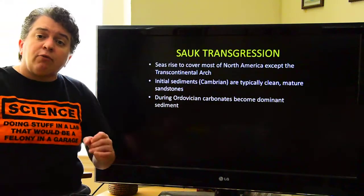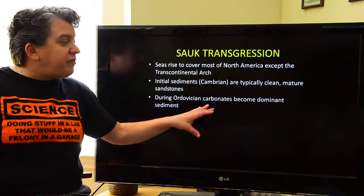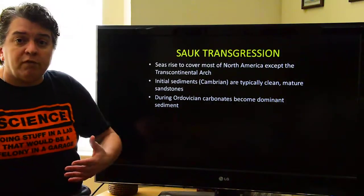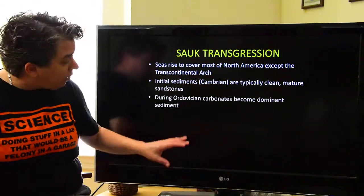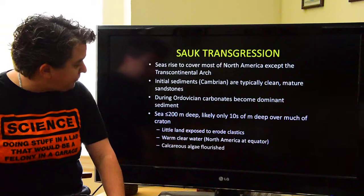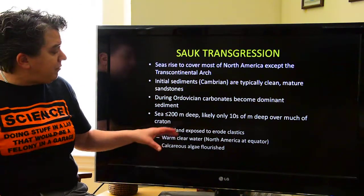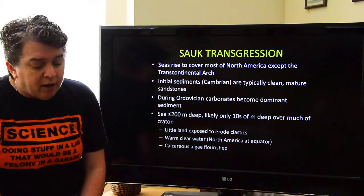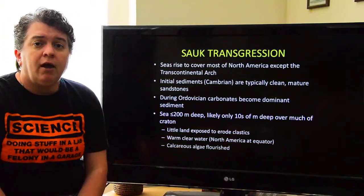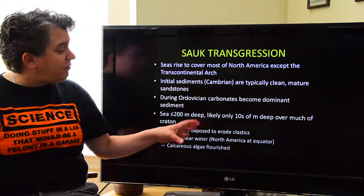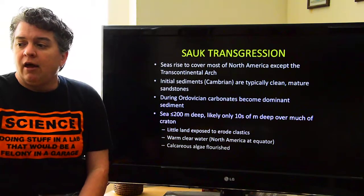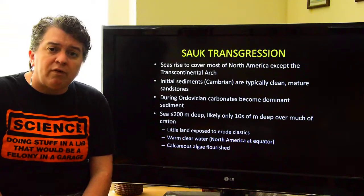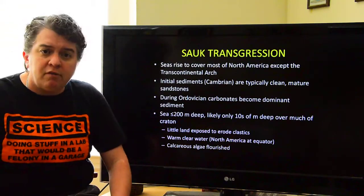As sea levels continue to rise and the water gets deeper, we start seeing carbonates — limestones and dolostones. During the Ordovician, when sea level was at its highest and we have the deepest water, limestones become much more dominant. The ocean covering North America was less than about 200 meters deep, and in many places only tens of meters deep. In Texas, the water probably wasn't that deep — kind of in the range of tens of meters.